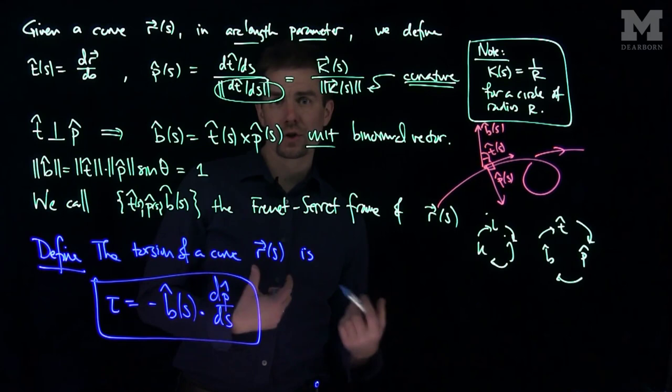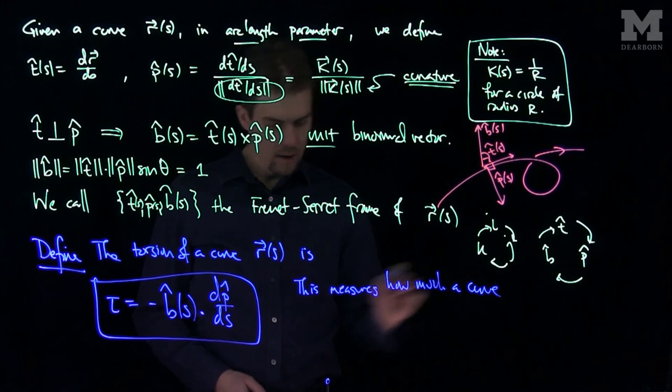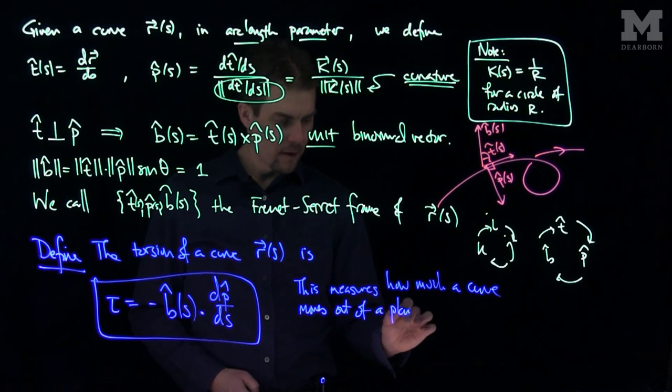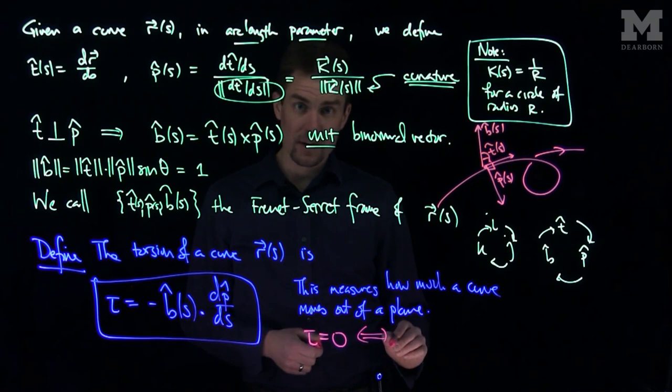So this is the definition of torsion of a curve. And torsion is the measure of how much a curve wants to move out of a plane. So this measures how much a curve moves out of a plane. And one important yet relatively easy thing to verify is that if the curve is planar, tau equals zero, the torsion is zero, if and only if the curve lies on a plane.